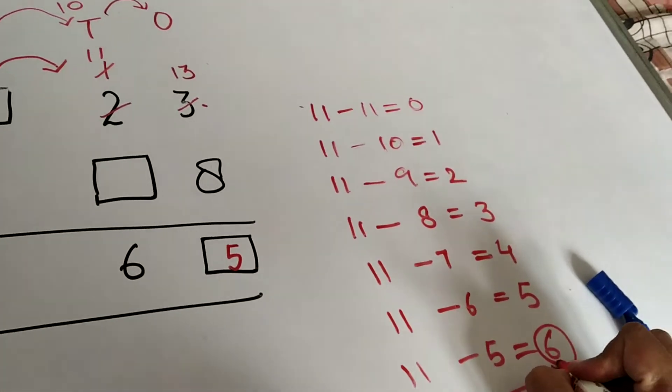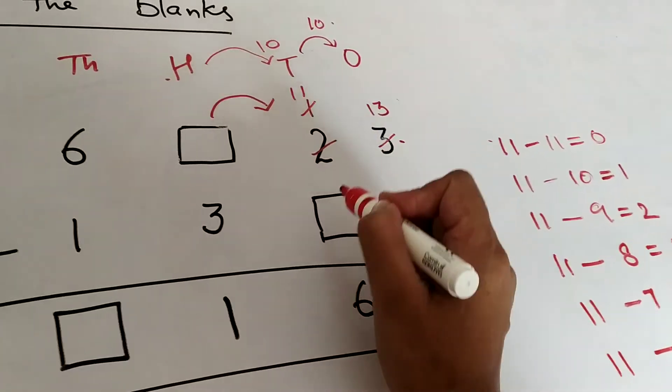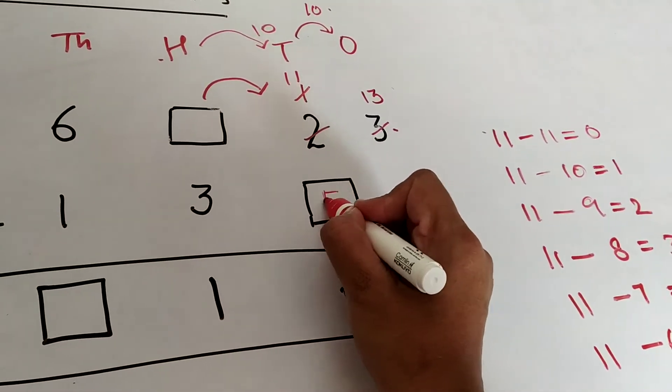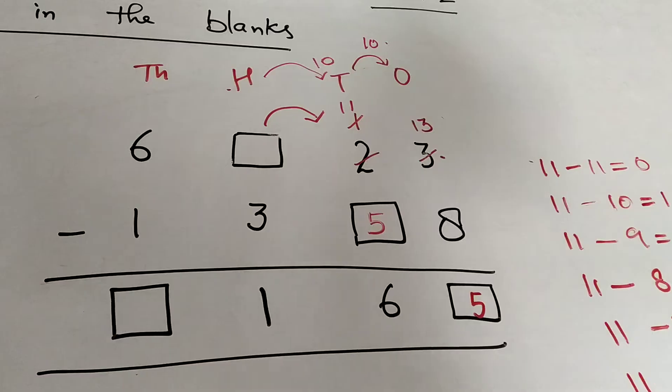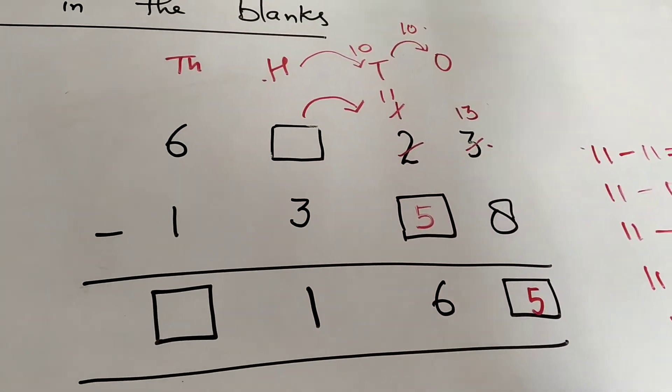This is what we wanted, 6 only. So if I write 5 here, it will become 11 minus 5 equals 6. This is also done now.